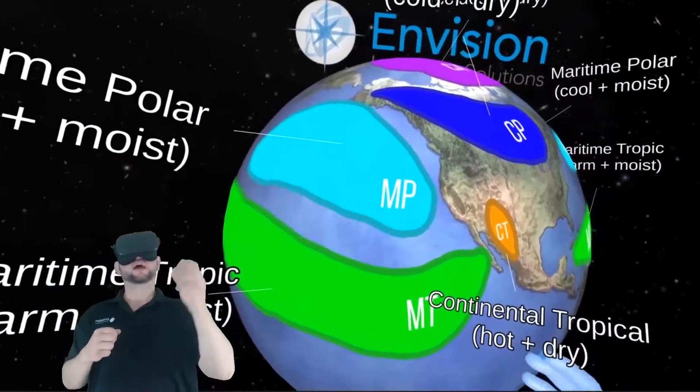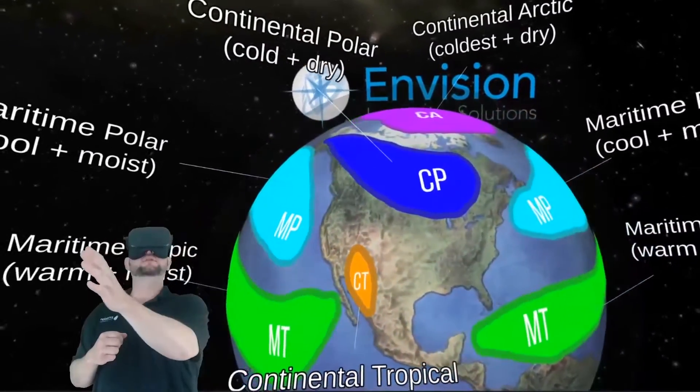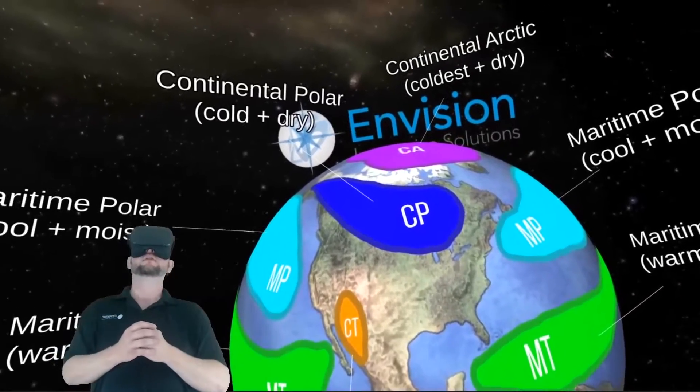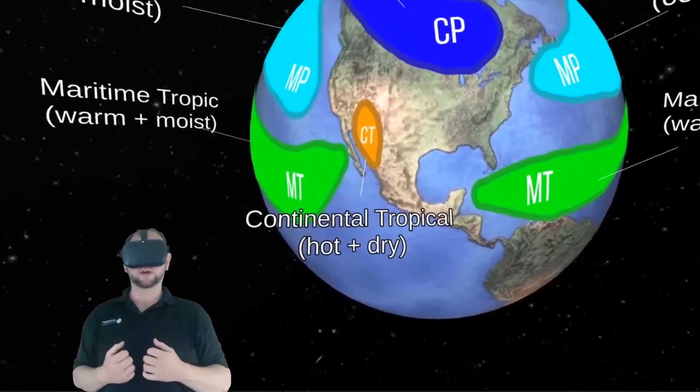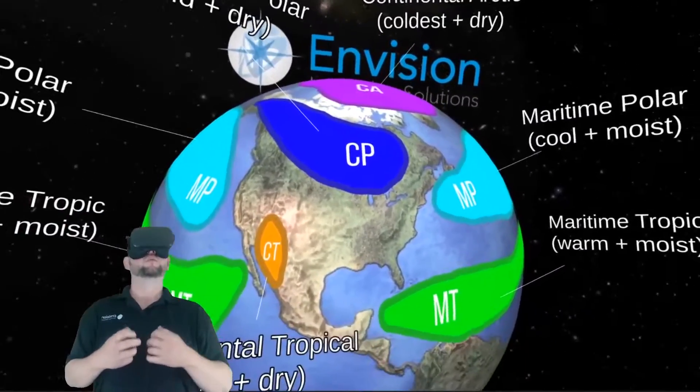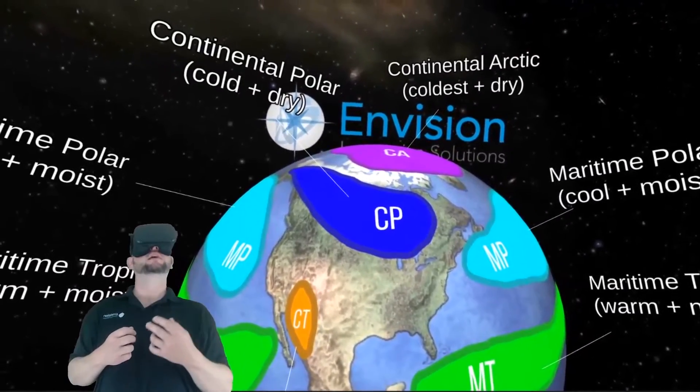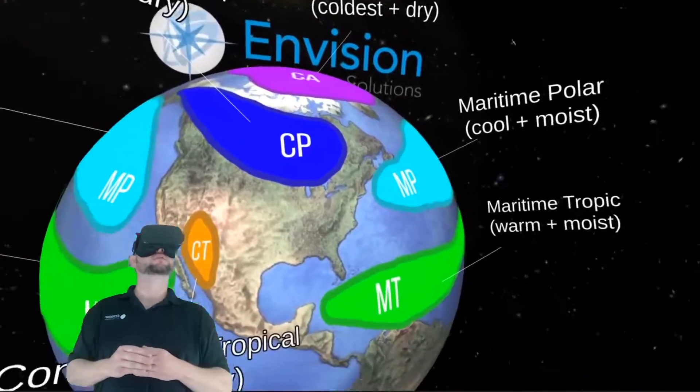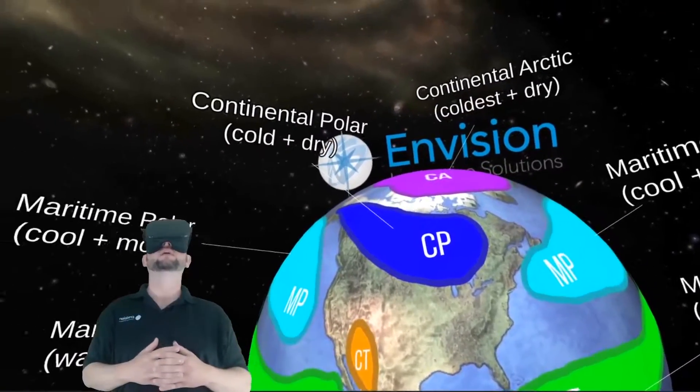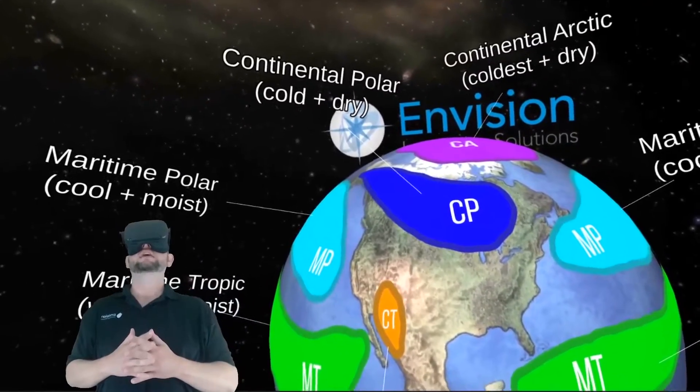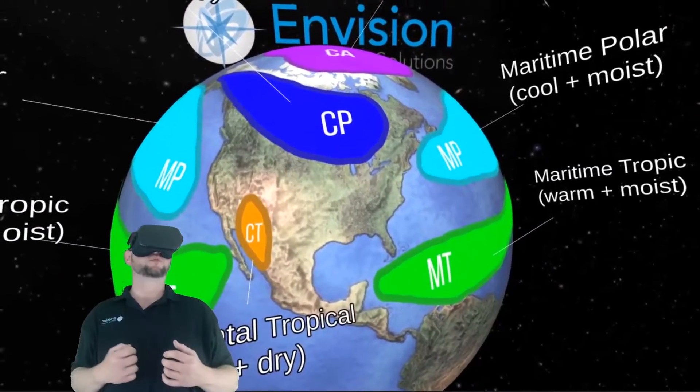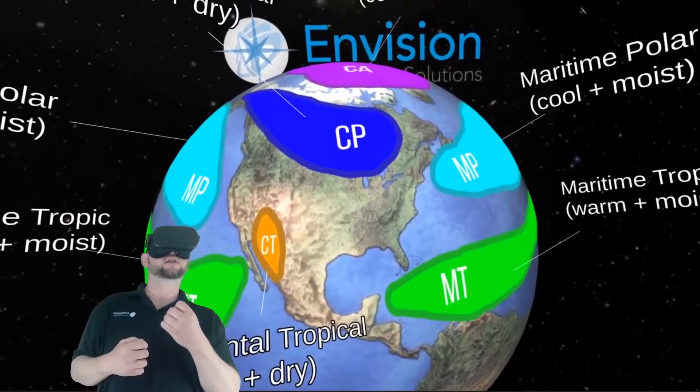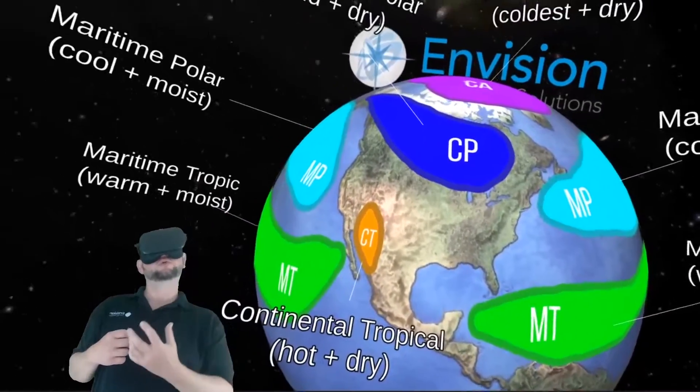So we can also look at air masses that typically exist on our planet. At the very top you see continental Arctic. That's the coldest air of the planet where the polar vortex likes to live in the winter times and then it relaxes in the summer time. Below that you have continental polar air. And this is what we call stale air when there's a snowstorm. Not the true Arctic air like above it, but enough cold to produce snow.